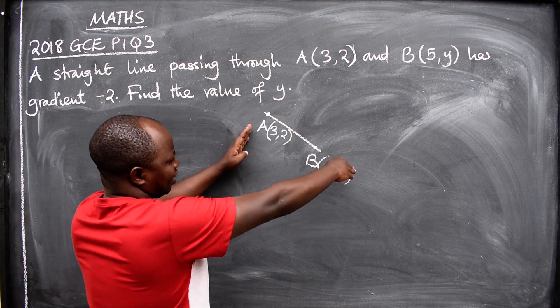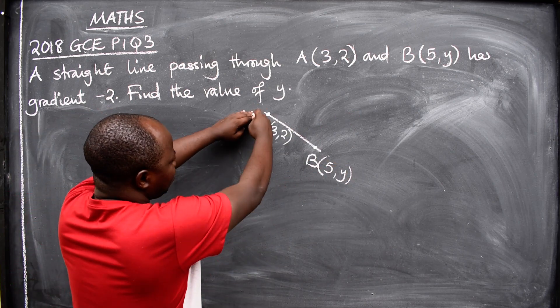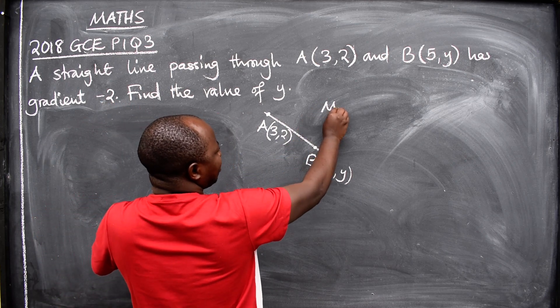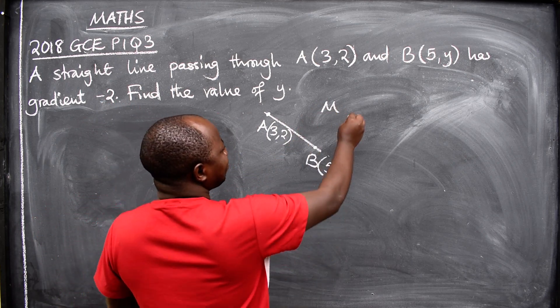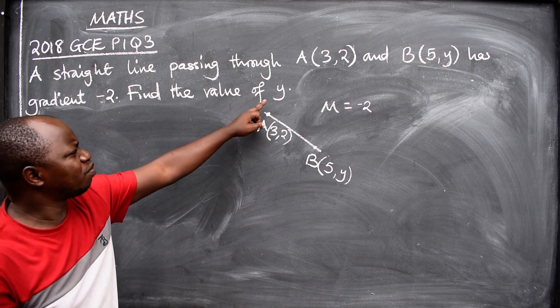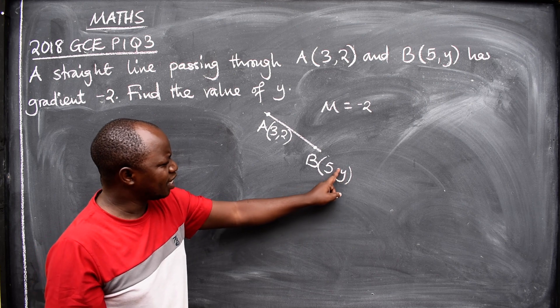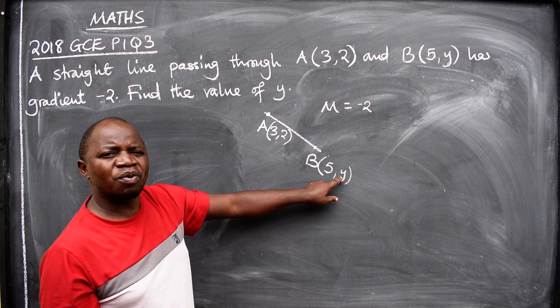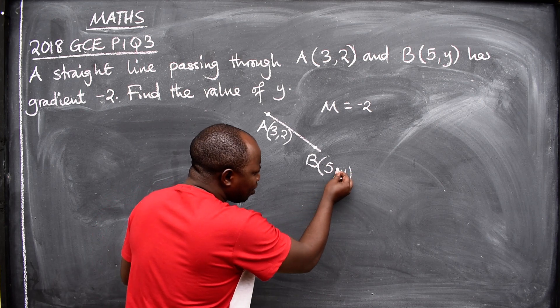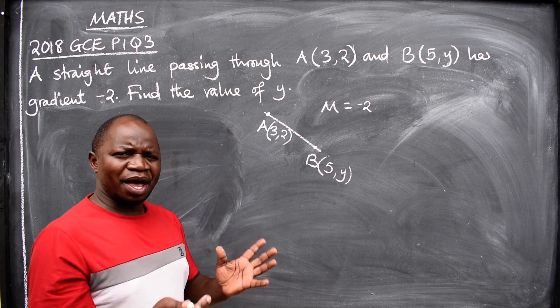Now we are told that the gradient of this line, abbreviated by the letter m, is equal to -2. They are saying we have to find the value of y. What will the y-coordinate be here? Where are you going to start from?